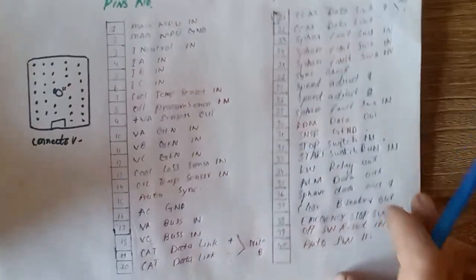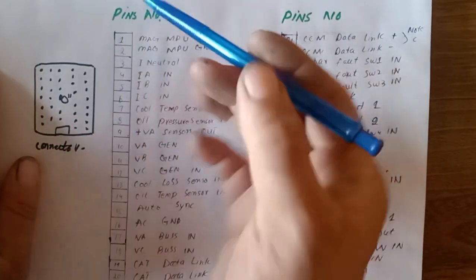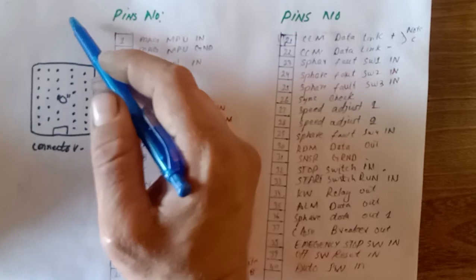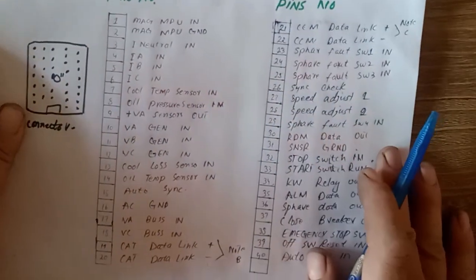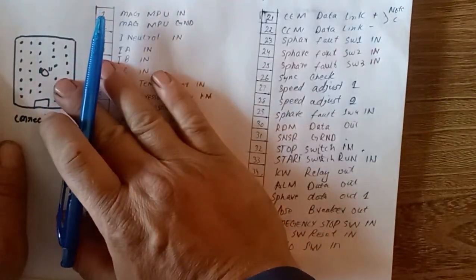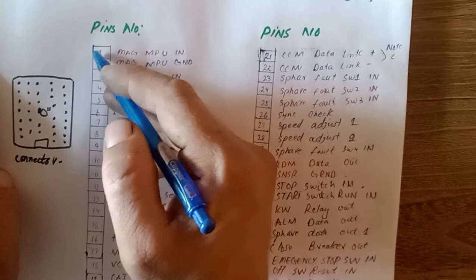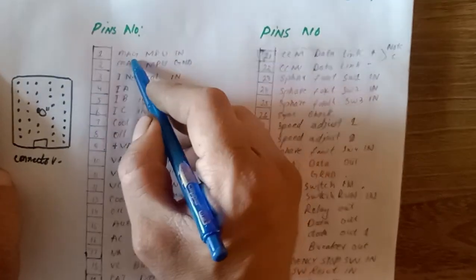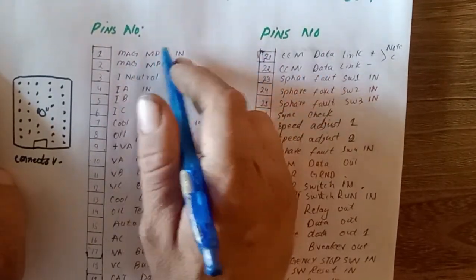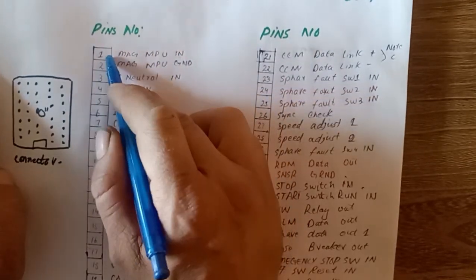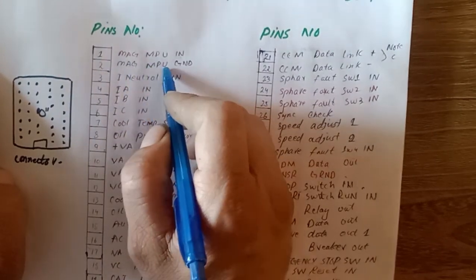Now I want to explain the complete pinout and pin ends of this connector. The pins inside are numbered. I made a complete table for better explanation. Pin number 1 is MPU - Magnetic Pickup Unit IN. Pin number 2 is MPU ground.